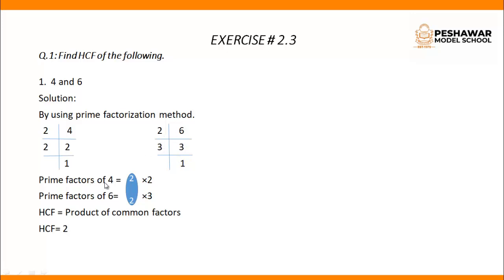Prime factors of 4 equal 2 cross 2, and prime factors of 6 equal 2 cross 3. We have to find the HCF which is the product of common factors. The common factor between 4 and 6 is 2. It means that the HCF of 4 and 6 is 2.